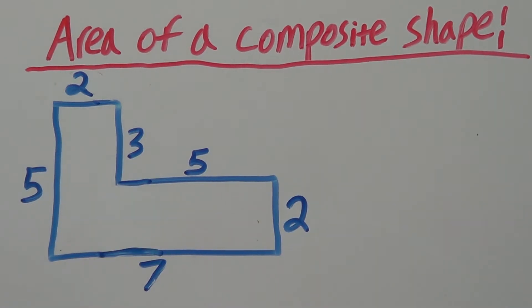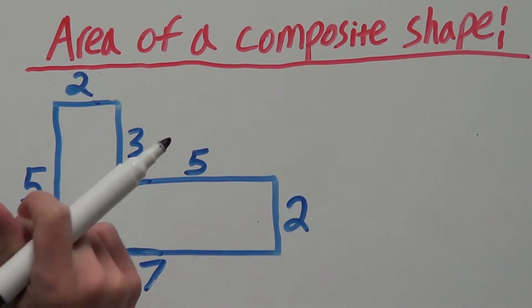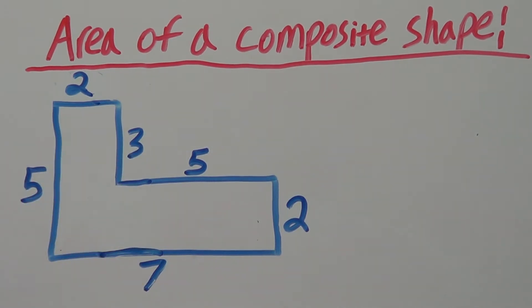The key to finding the area of a composite shape is to separate it into two or more shapes that you already know how to find the area of.